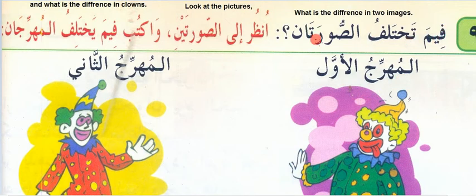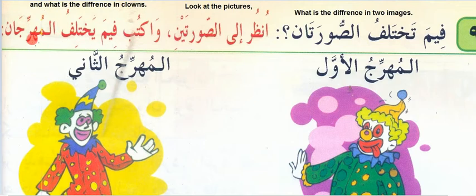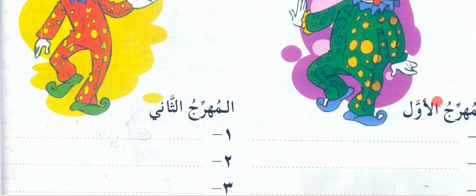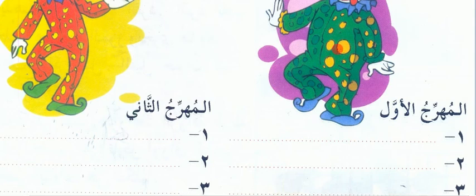'Fema takhtalif al-suratan' — what is the difference between the two images? 'Unzuri ila al-suratan' — look at the pictures and write the differences. There are two clowns: 'maharjan' — the singular form. 'Maharjaan' has a shadda. 'Al-maharjan al-awwal' means the first clown, 'al-maharjaan al-thani' means the second clown.